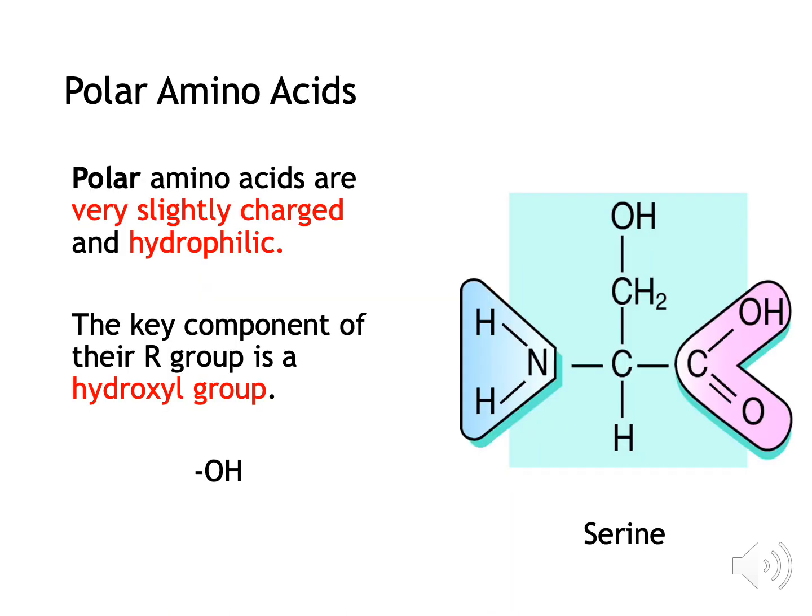Polar amino acids are very slightly charged. This allows them to form hydrogen bonds with other molecules such as water. This will be important later in the course when we discuss amino acids that are hydrophilic, which means they are soluble in water. The R-group in polar molecules contains a hydroxyl group. An example of a polar amino acid is serine.